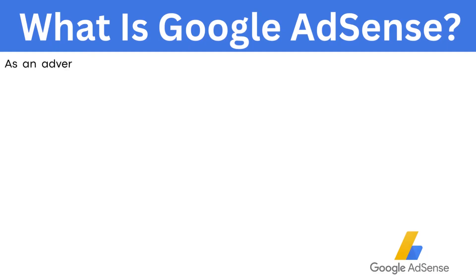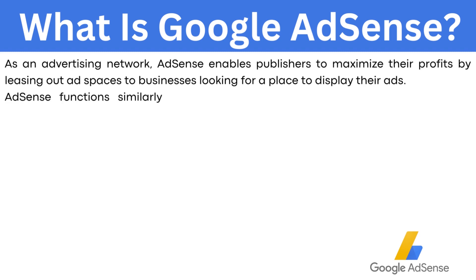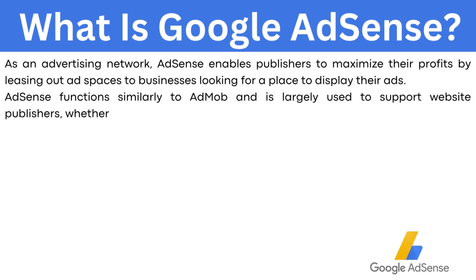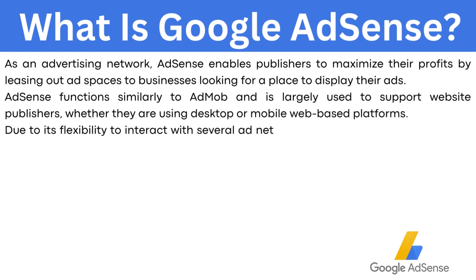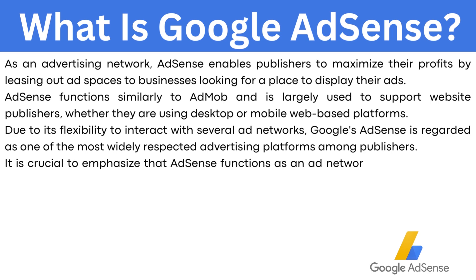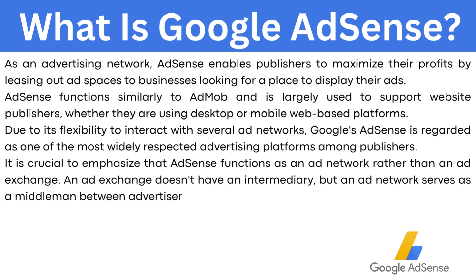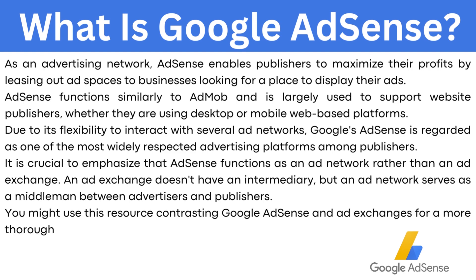What is Google AdSense? As an advertising network, AdSense enables publishers to maximize their profits by leasing out ad spaces to businesses looking to display their ads. AdSense functions similarly to AdMob and is largely used to support website publishers, whether using desktop or mobile web-based platforms. Due to its flexibility to interact with several ad networks, Google AdSense is regarded as one of the most widely respected advertising platforms among publishers. It's crucial to note that AdSense functions as an ad network rather than an ad exchange — an ad network serves as a middleman between advertisers and publishers.